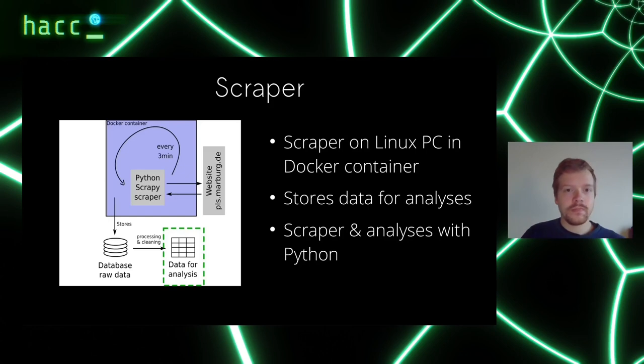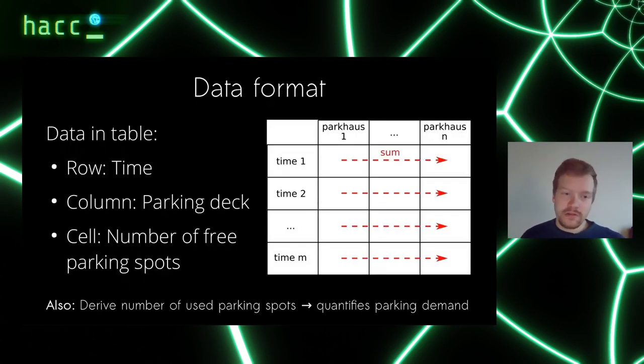The data format is pretty simple. It's processed internally with data frames using Pandas. The row corresponds to the time, the column corresponds to the specific parking deck, and the cell corresponds to the number of free parking spots. To make the numbers more usable, I transformed the number of free parking spots to the number of used parking spots by subtracting it from the maximum.